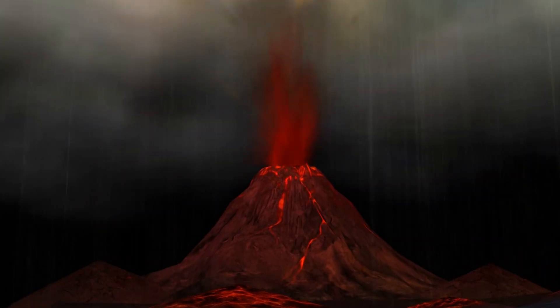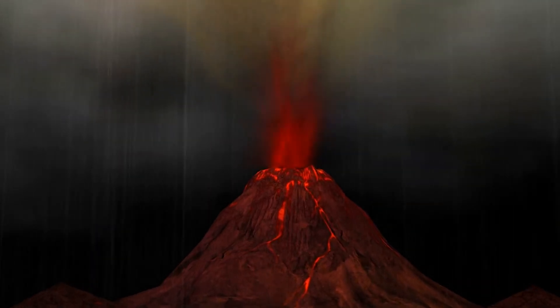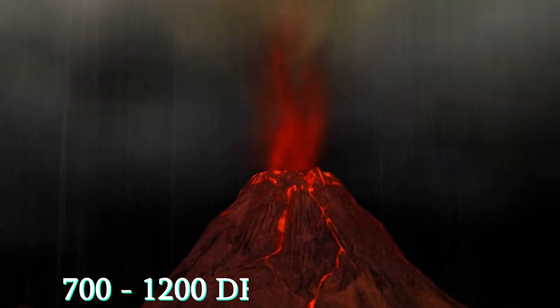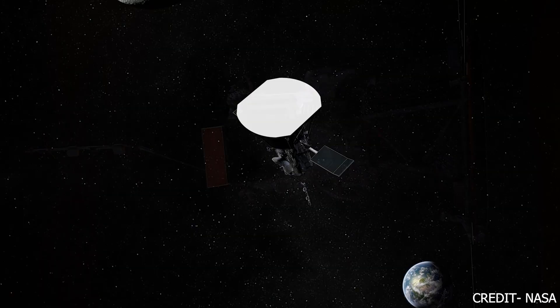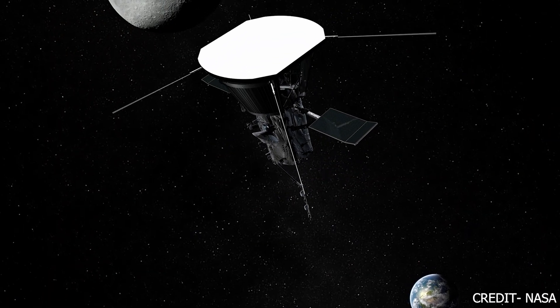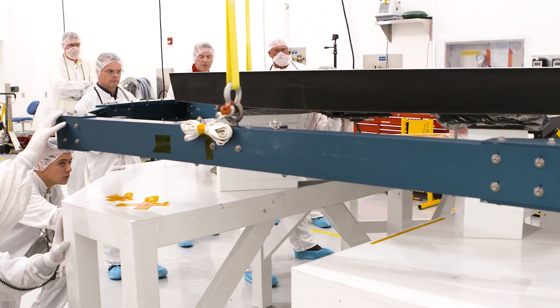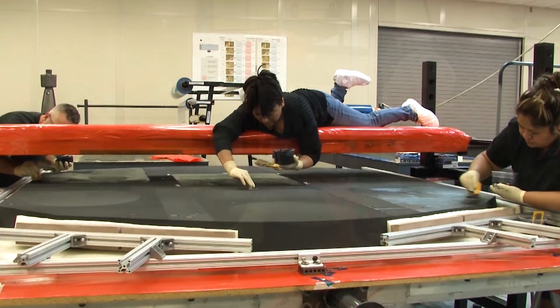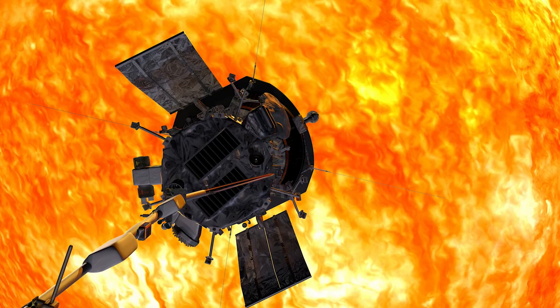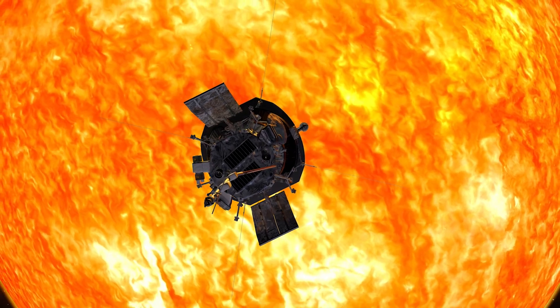For comparison, the temperature of lava from a volcano typically ranges between 700 and 1200 degrees Celsius. Despite this, the heat shield can easily withstand the temperature of 1400 degrees Celsius. This is because it has been specifically designed to protect the spacecraft from the extreme temperatures of the sun's corona.